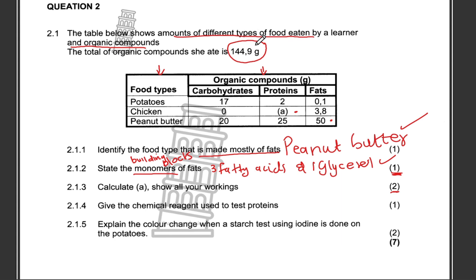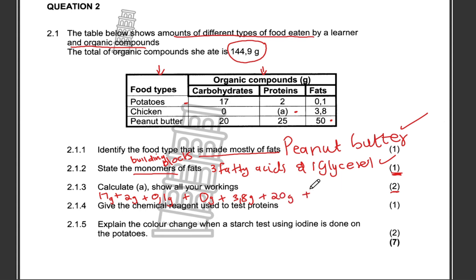We are given the total of the organic compounds, so we need to add the grams for each organic compound for each food type. Starting with potatoes: 17g + 2g + 0.1g + 0.8g + 3.8g + 20g + 25g + 50g. The total is 117.9 grams.